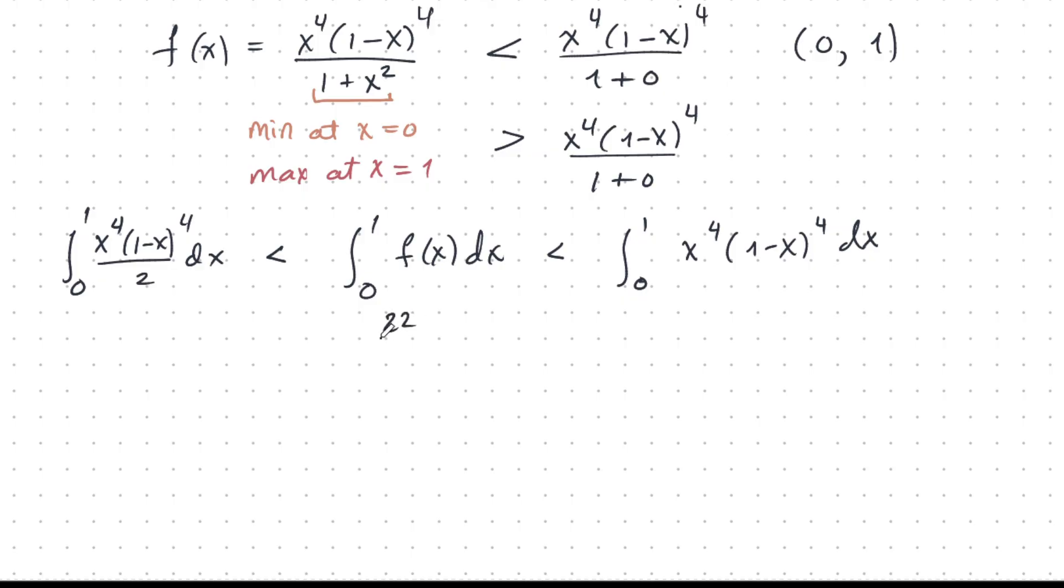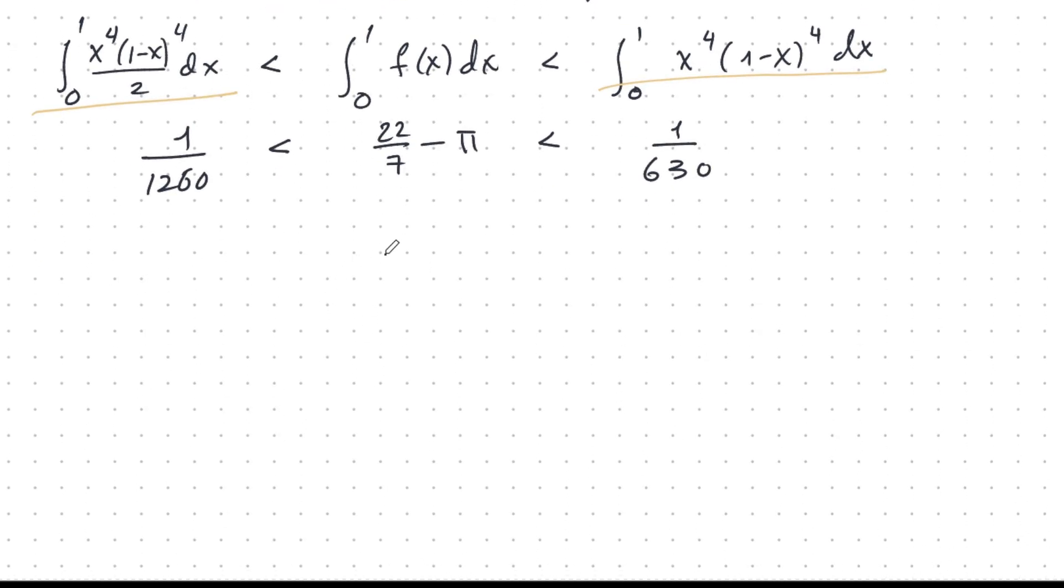So we have already figured out that this is 22 over 7 minus pi. And so these two integrals on the left and right, those are easy to figure out. I'll leave that as an exercise for you to do. Very easy. Just multiply everything out and integrate. So what do we get? This integral is 1 over 630. But this actually is just 1 half of 1 over 630. So that's 1 over 1260.